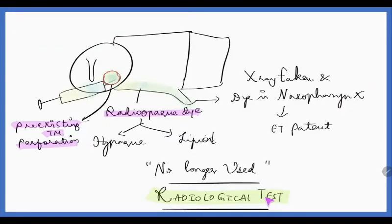Next is radiological test. In radiological test, the radio-opaque dye, that is Hypaque or Lipiodol, is instilled into the middle ear cavity with a pre-existing tympanic membrane perforation. What happens is the moment we instill it in the middle ear cavity, if at all there is patent Eustachian tube, that enters into the nasopharynx. This is a dye, so it will cause many adverse effects. So it is no longer used now. Before, they were injecting the dye and taking x-rays. This method is no longer commonly used nowadays.